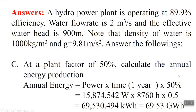For the last part, at a plant factor of 50%, calculate the annual energy production. Energy is power multiplied by time. It is one year with a plant factor of 50%, so you multiply by 0.5. You already have the power value and the time is the well-known 8,760 hours figure. Normally we calculate in kilowatt hours, but you can express the final answer in gigawatt hours if you prefer.